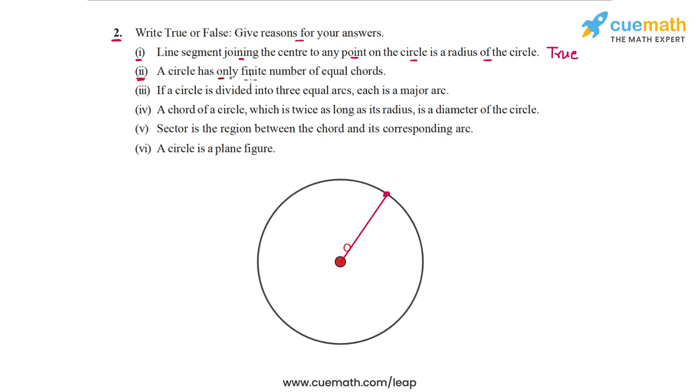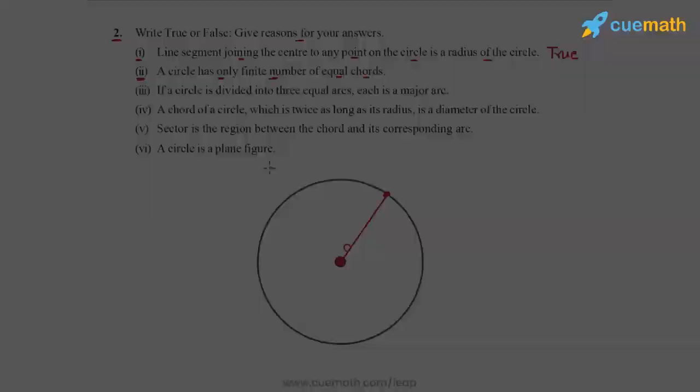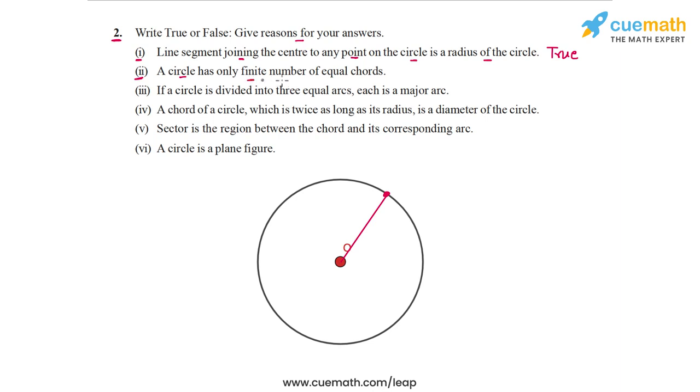The second statement says a circle has only a finite number of equal chords. Now, this is clearly a false statement. And the easiest way to understand why it's false is to think about diameters of the circle. So a diameter is also a chord of the circle, and we know that in a circle we can draw infinitely many diameters. So draw any chord through the center and you get a diameter. So a circle will have infinite number of equal chords. So this second statement is false.